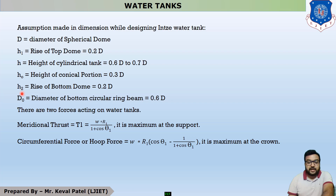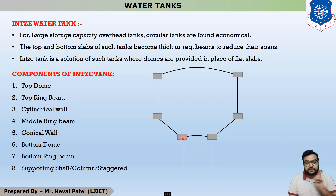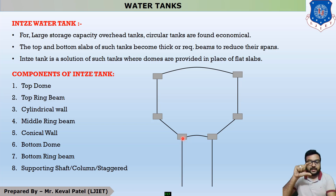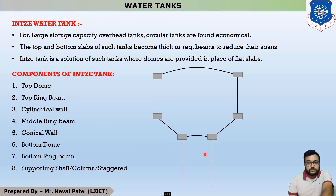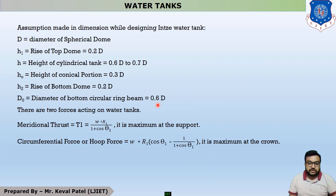H2 is the rise of the bottom dome, with preliminary dimensions taken as 0.2 times D. D0 is the diameter of the bottom circular ring beam, also called the diameter of the supporting shaft. D0 is taken as 60% of D, that is, 0.6 times D. These are the general dimensional assumptions made when designing this type of water tank.